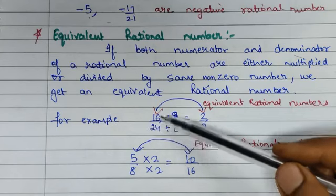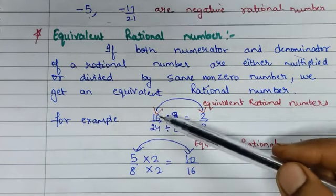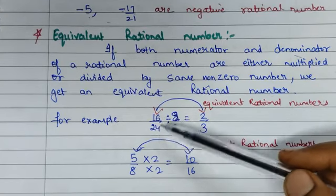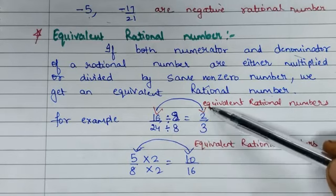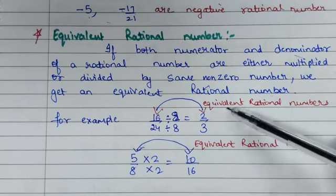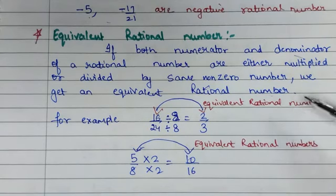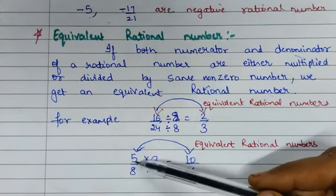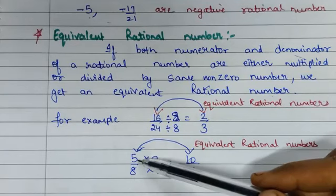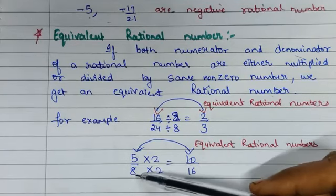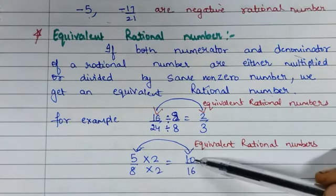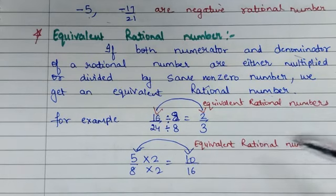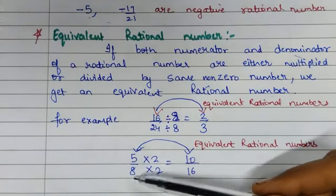Suppose we have 16 by 24. Both numerator and denominator are divisible by 8, so on dividing by 8, whatever fraction we get will be an equivalent rational number for 16 upon 24. Similarly, for 5 upon 8, if we multiply both numerator and denominator by 2, we get 10 upon 16, which is also an equivalent rational number for 5 upon 8.